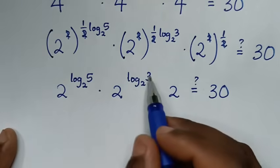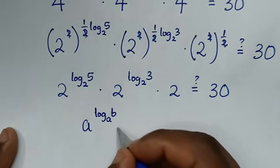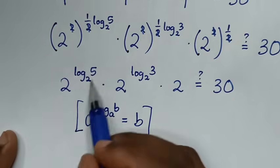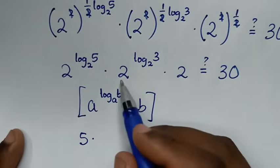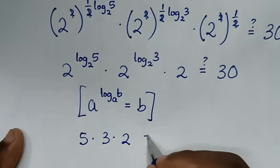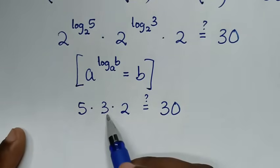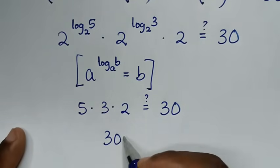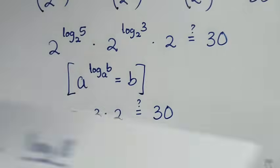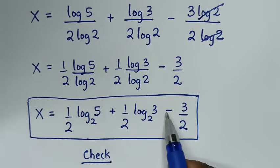Using the identity a^(log_a(b)) = b, we get 2^(log₂5) = 5 and 2^(log₂3) = 3. So the expression becomes 5 times 3 times 2 = 30, which equals 30. Left side equals right side, confirming the answer: x equals (1/2)·log₂(5) plus (1/2)·log₂(3) minus 3/2.